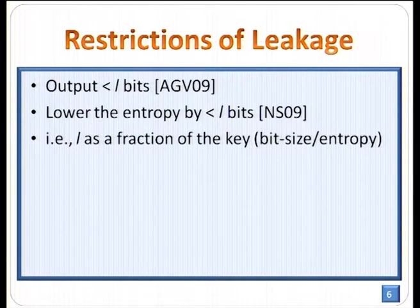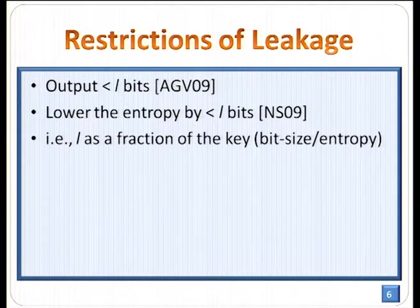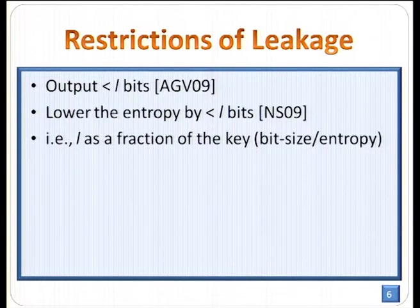There is a line of research on the restriction on the types of leakage that are allowed. The first model restricts the outputs of the leakage function to less than L bits, where L is usually strictly smaller than the size of the secret key, so the leakage function cannot directly leak the secret key. Later, there was an improvement allowing the leakage function to lower the entropy of the secret key by less than L bits. In summary, L is considered as a fraction of the key, either in terms of bit size or entropy.